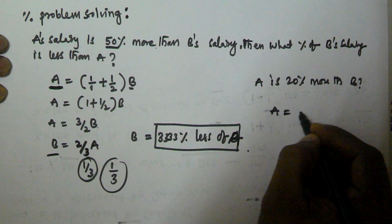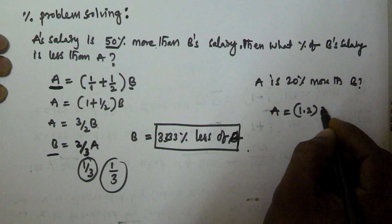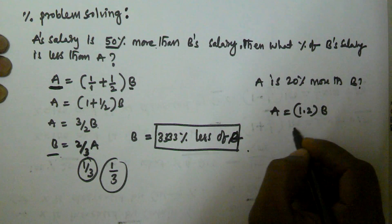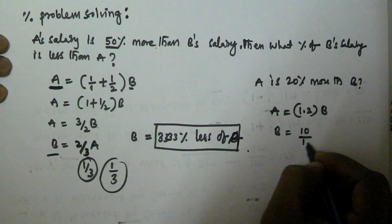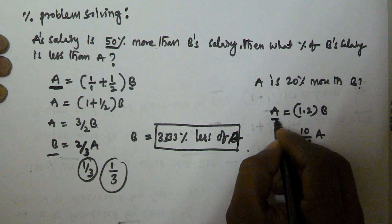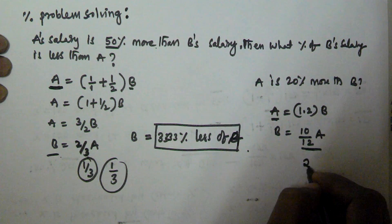So A's salary is equal to 20%, so that is 1.2 into B. So 1.2 into B. This is going to be B is equal to 10 by 12 of A. So initially it is A. Now the current value of A is 10 by 12. That means A is reduced by 2 by 12.